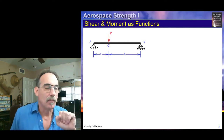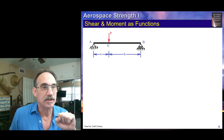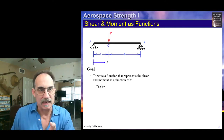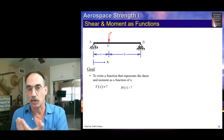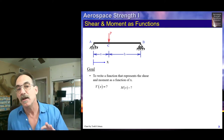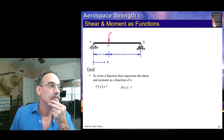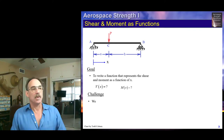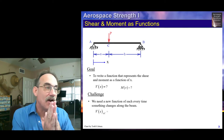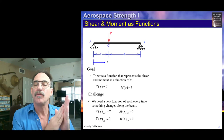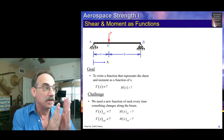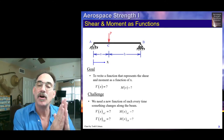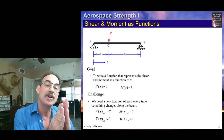Let's start with a simple pin-to-pin beam with an applied transverse force P. Our goal is to write a function that expresses the shear along the beam and the moment along the beam. Sometimes the shear is constant along portions of the beam, sometimes the moment is constant, but often both values will change. So our goal is to write: what is our shear V as a function of x-position? What is our moment M as a function of x-position?